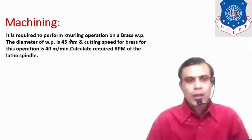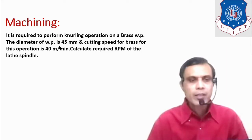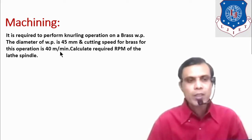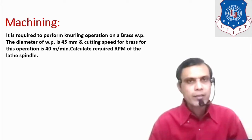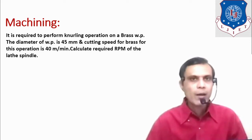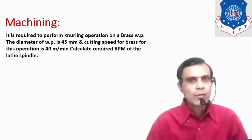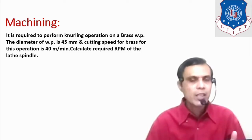Next question: it is required to perform a knurling operation on a brass workpiece. The diameter of the workpiece is 45 mm and the cutting speed for this knurling operation is 40 metres per minute. We need to calculate the required RPM of the lathe spindle. The spindle speed depends on parameters such as workpiece material, cutting tool material, type of operation, condition of the machine, finishing required, and skill of the operator.